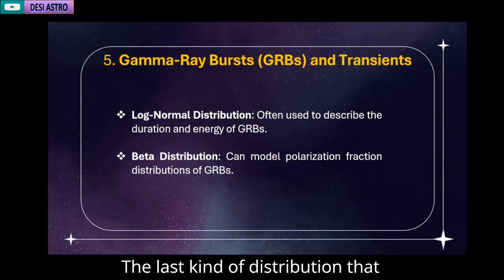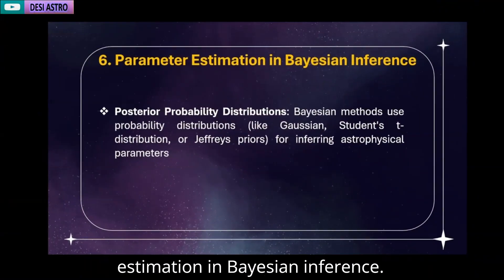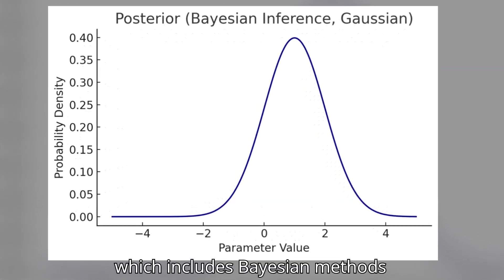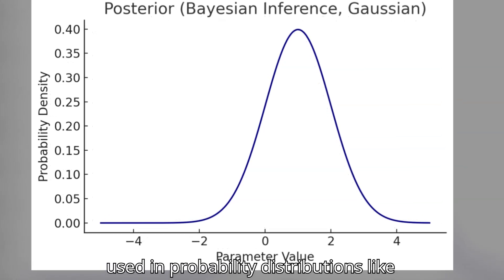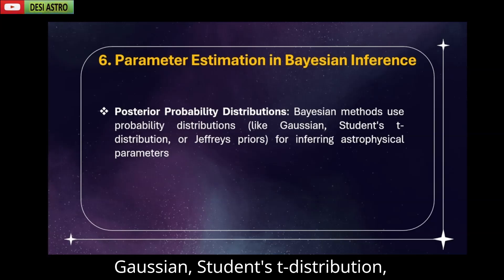The last kind of distribution that we have is parameter estimation in Bayesian inference. Posterior probability distribution which includes Bayesian methods use probability distributions like Gaussian, Student's T-distribution, and Jeffreys priors for inferring astrophysical parameters.